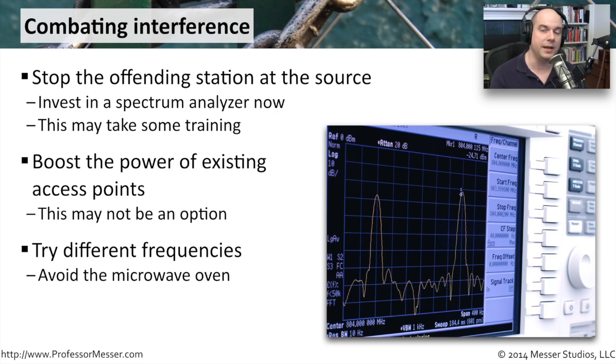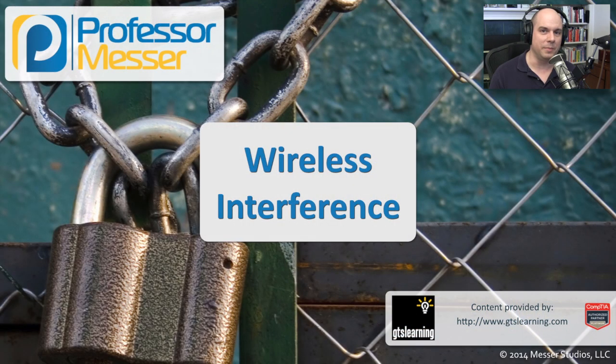If somebody is maliciously trying to create interference so that your network isn't going to operate, your primary goal may be to find that, get it off the network, and allow your network traffic to communicate normally.